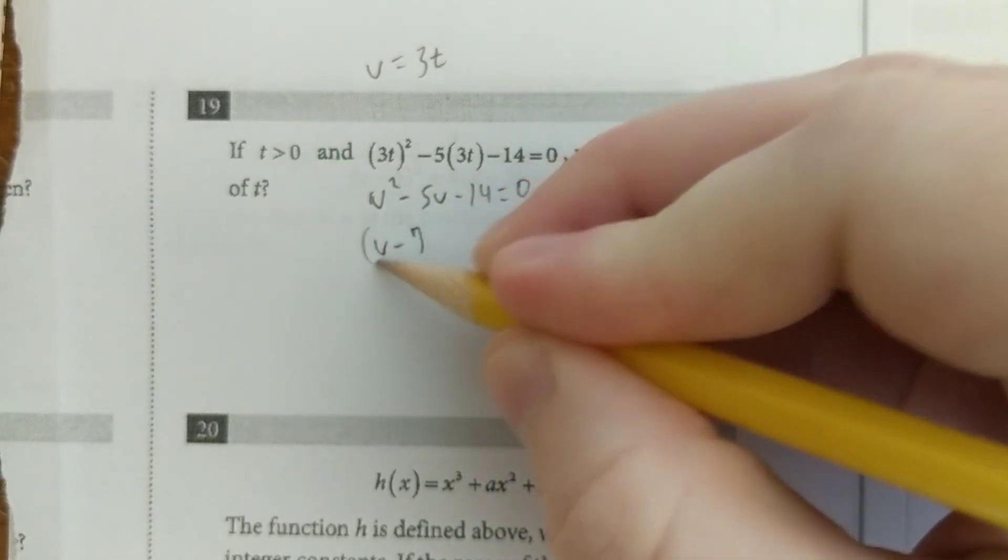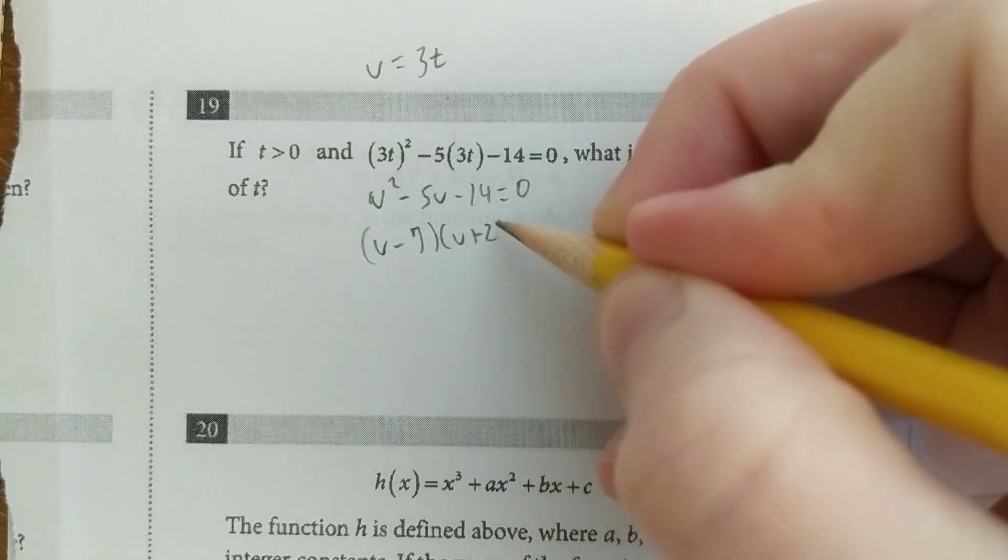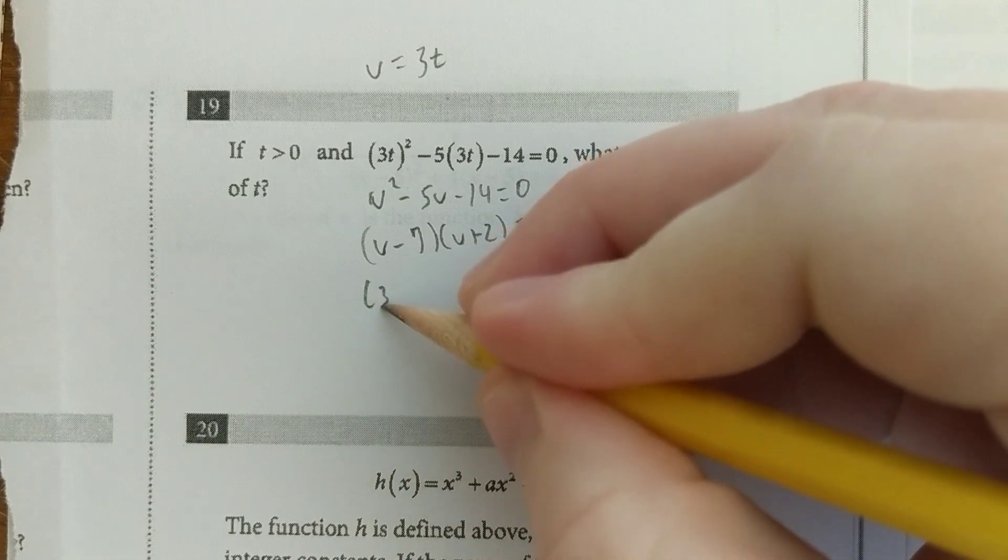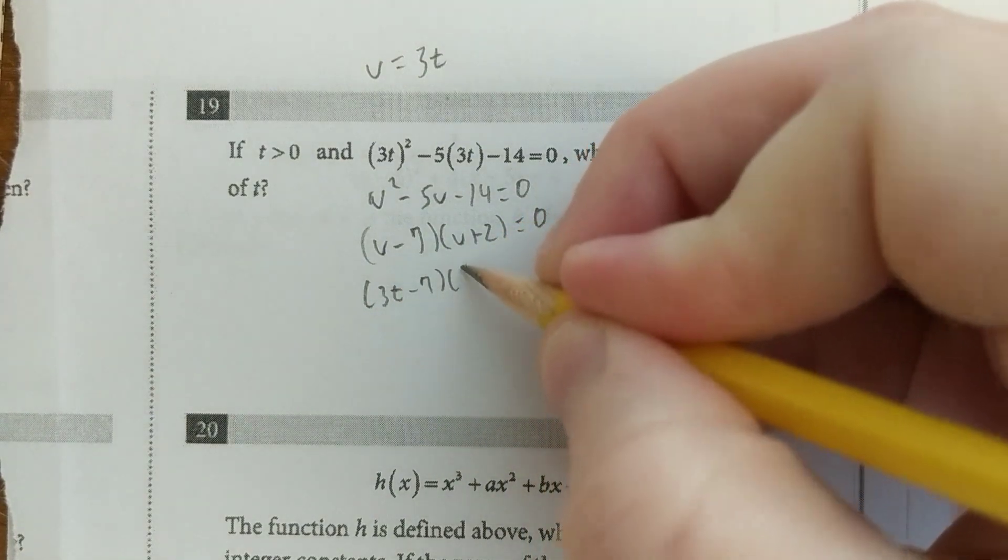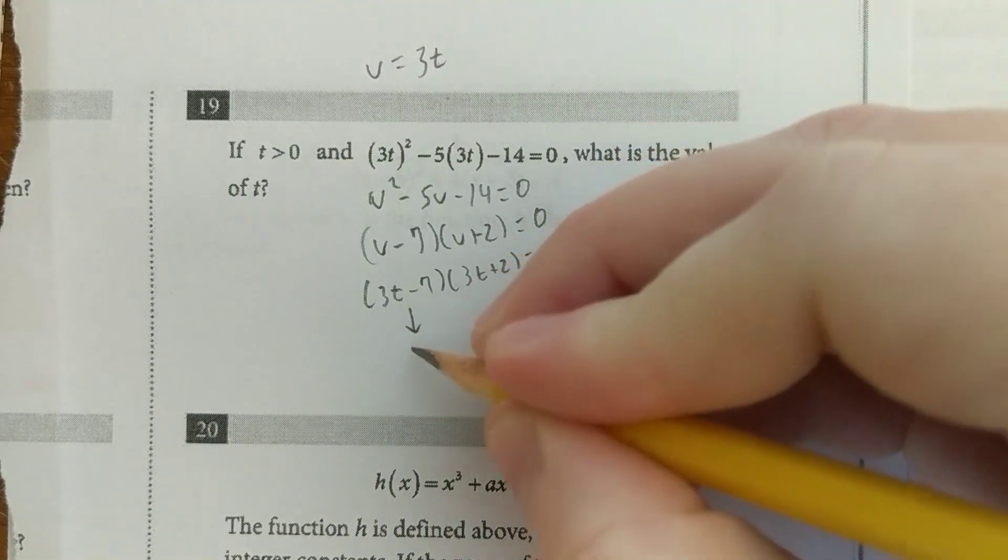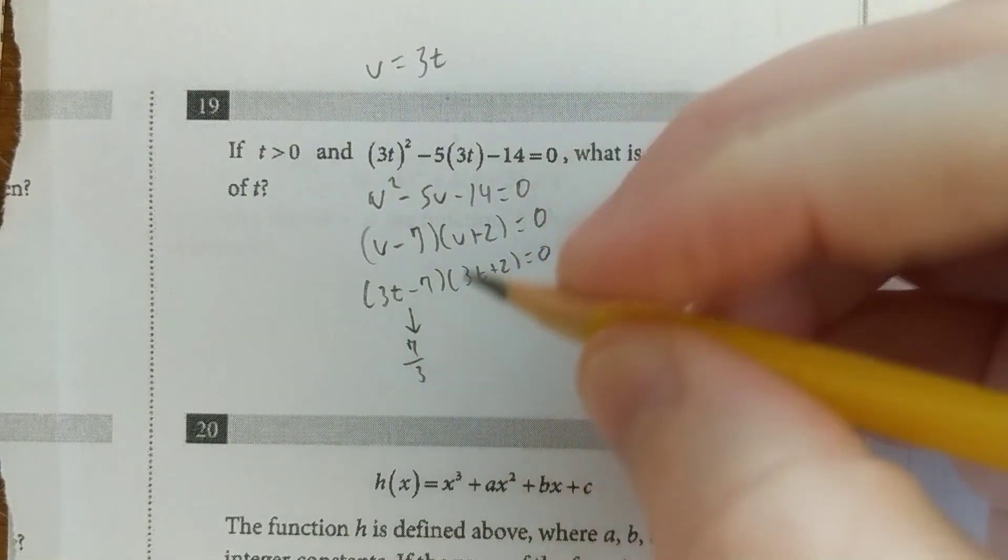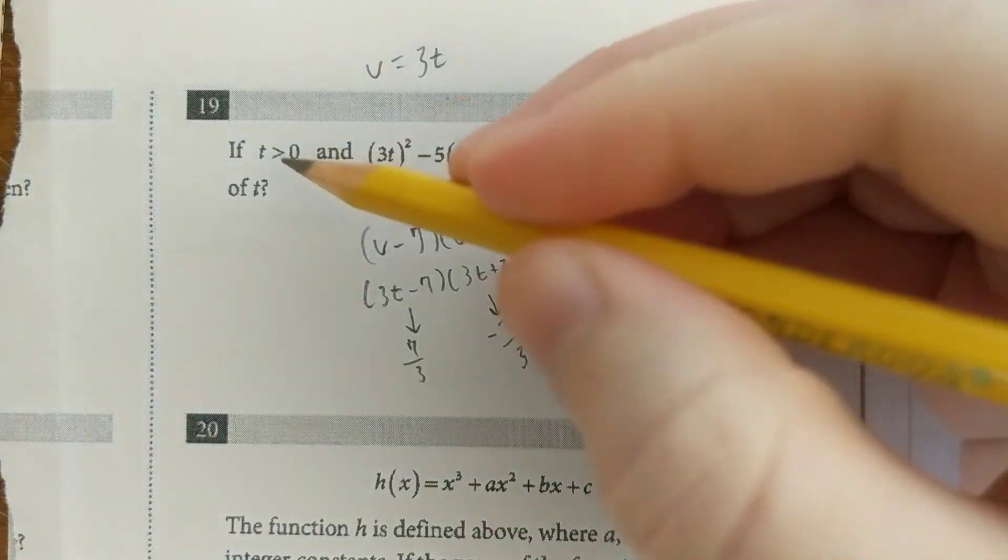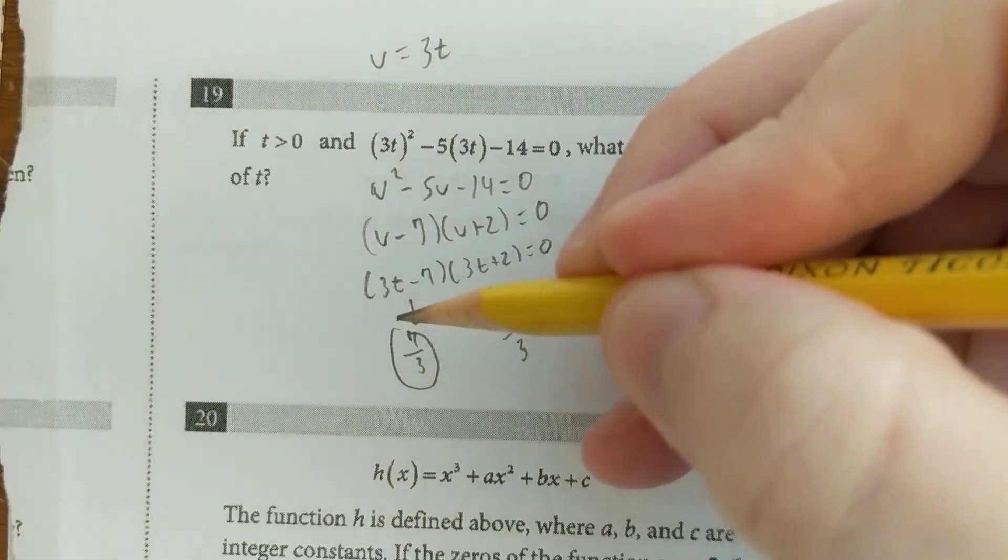Now that's a lot easier to factor. u minus 7, u plus 2 equals 0. Then we're going to put the 3t back in. So 3t minus 7, 3t plus 2. And you just solve them each. So in this case, you get 7 over 3. In this case, you get negative 2 over 3. And t has to be positive, so the answer is 7 over 3.